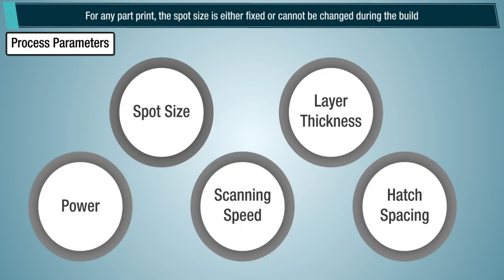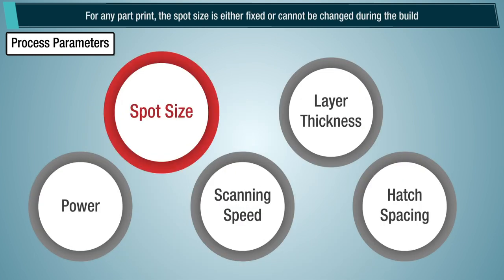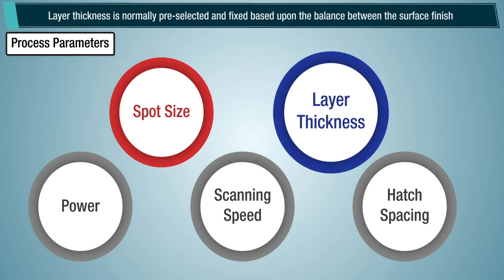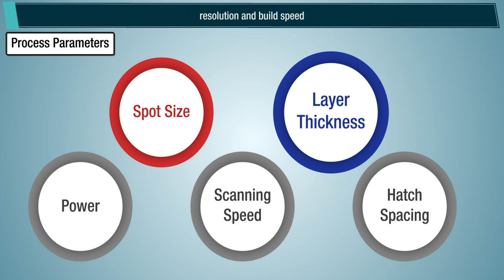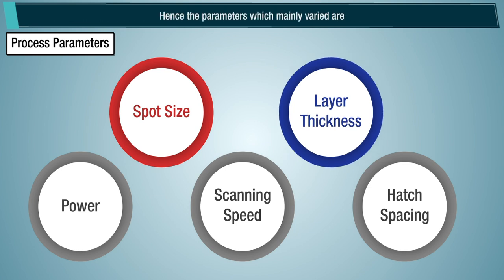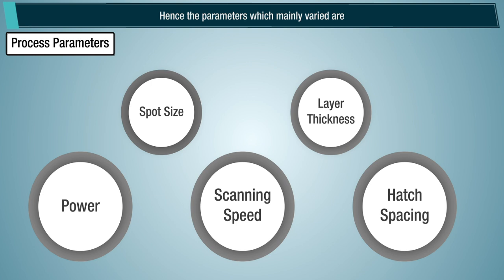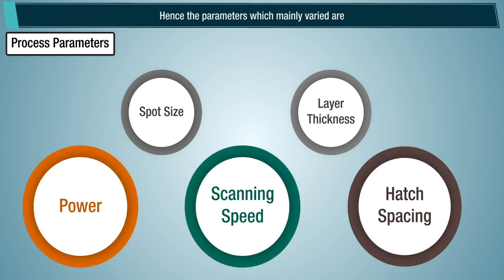For any part print, the spot size is either fixed or cannot be changed during the build. Layer thickness is normally pre-selected and fixed based upon the balance between the surface finish, resolution and build speed. Hence the parameters which mainly varied are power, scanning speed, and hatch spacing.